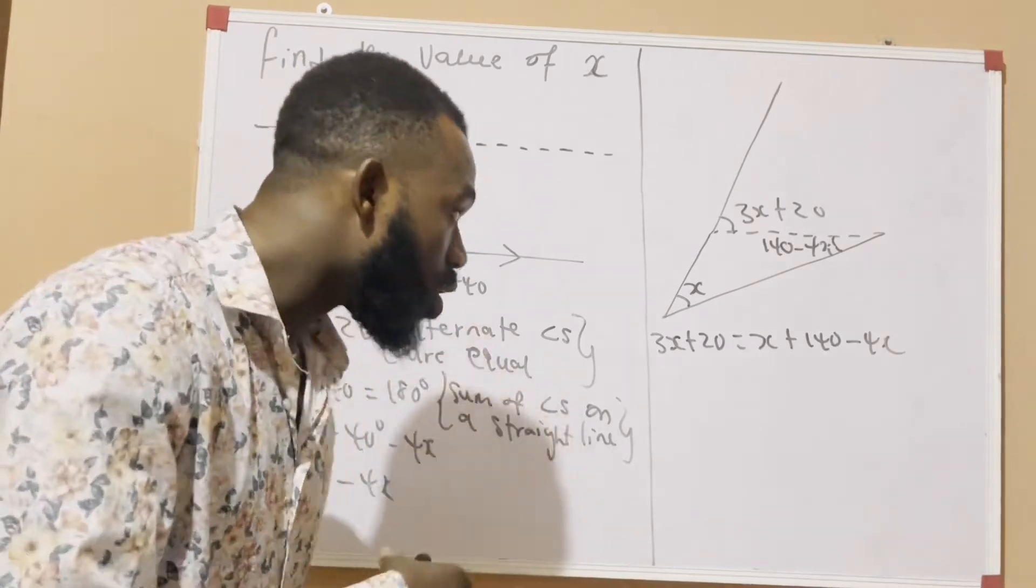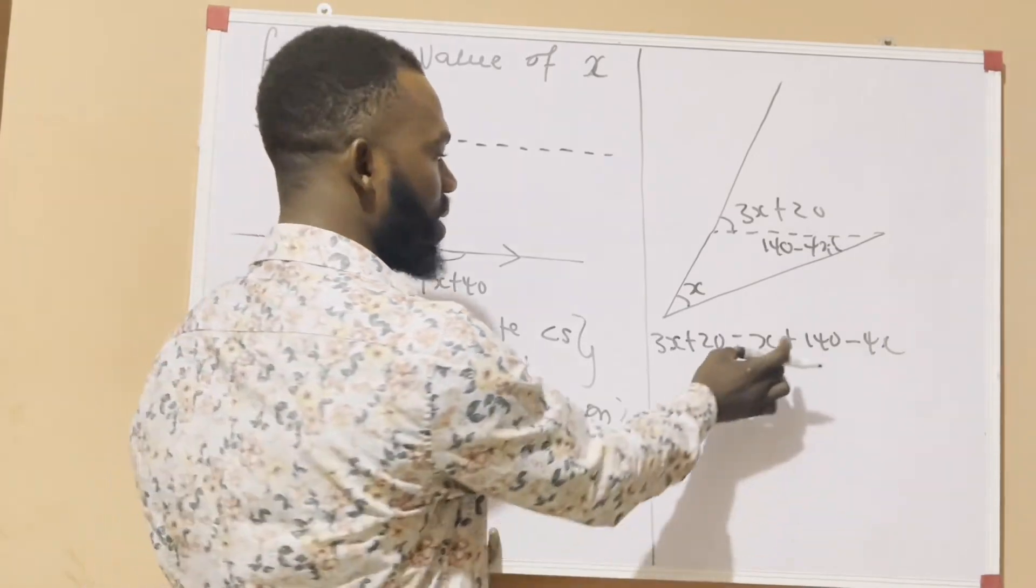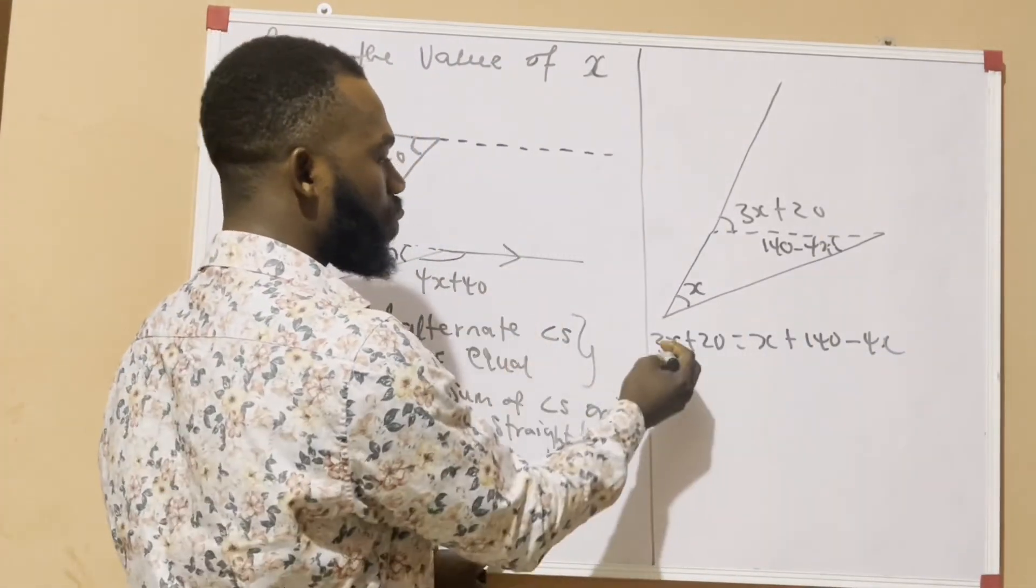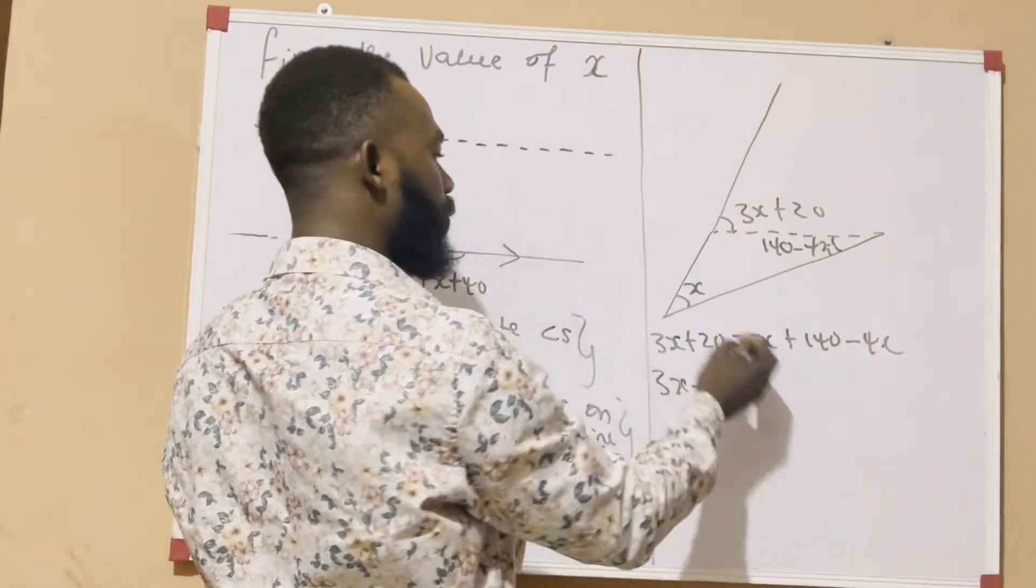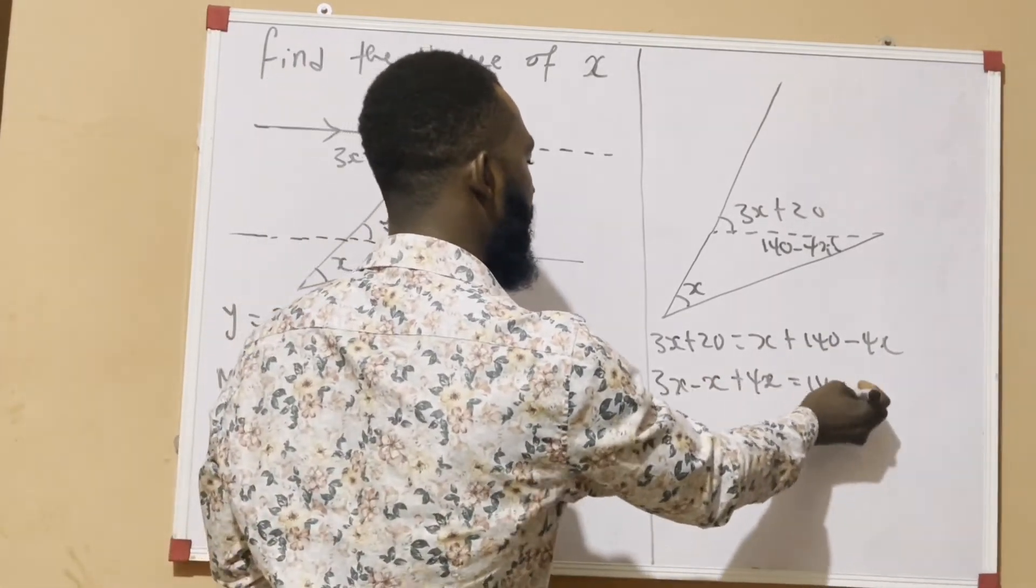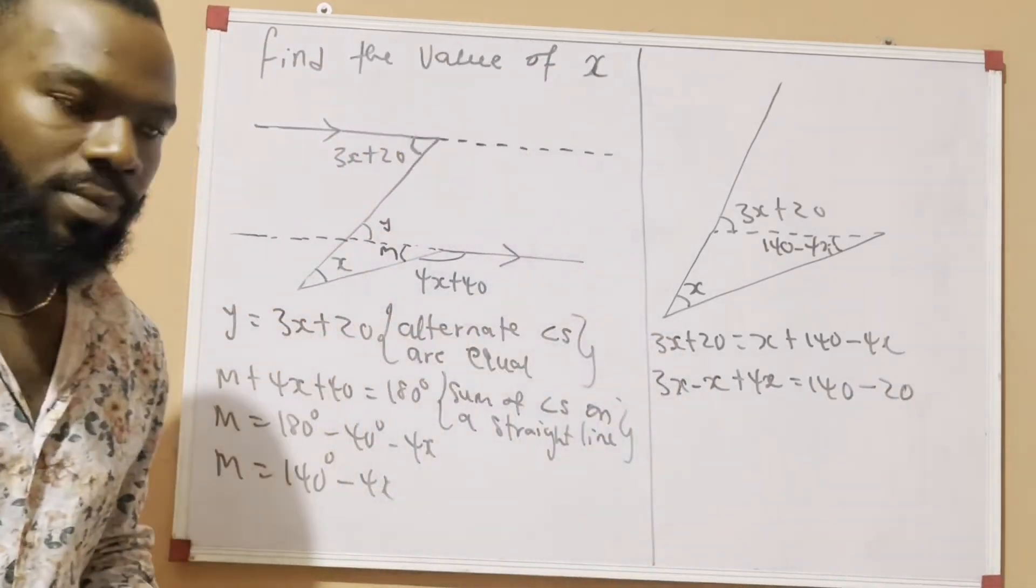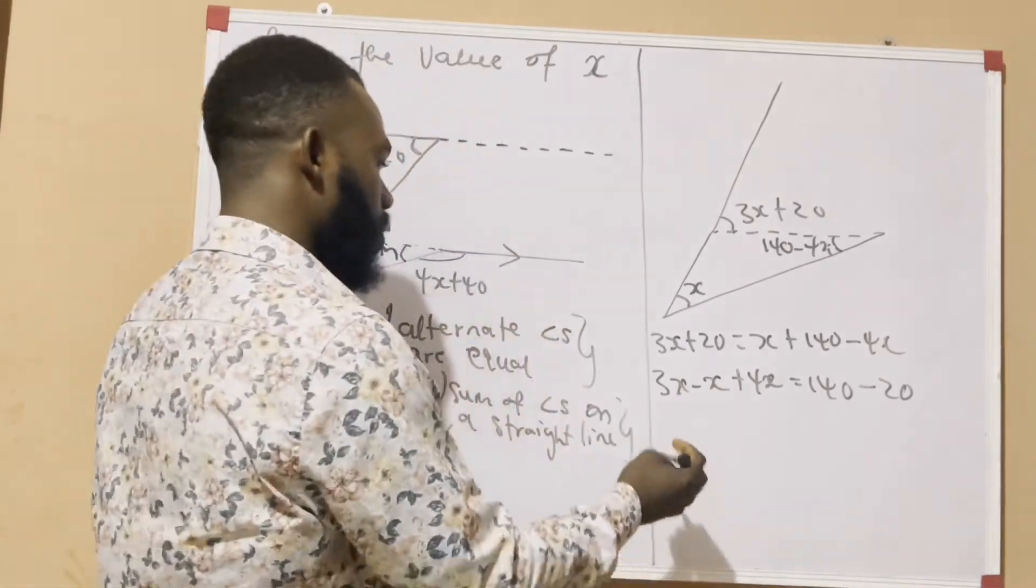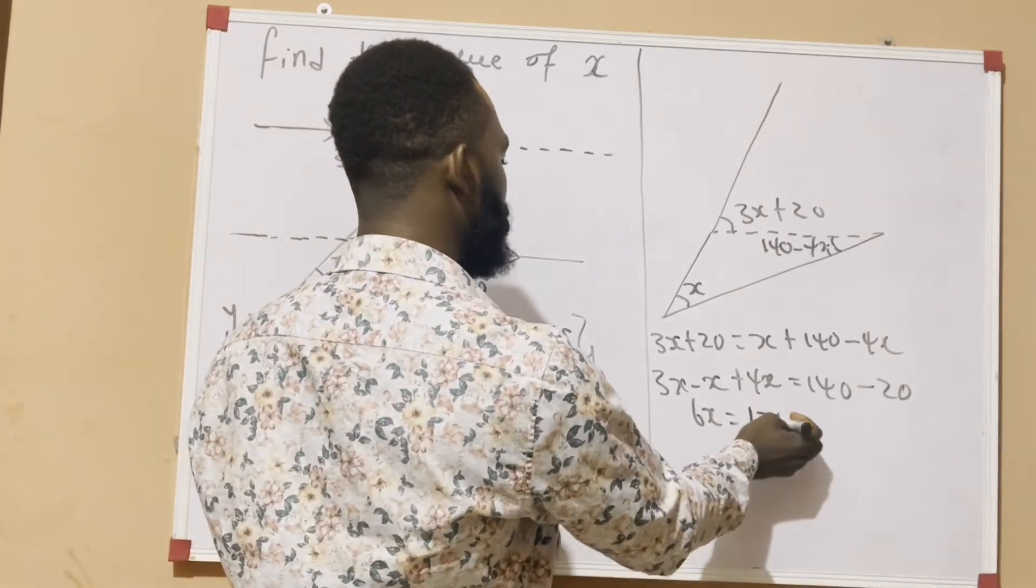Let's take x to one side of the equation and then a constant to the other side of the equation. So, it means x and minus 4x has to come to the left-hand side. So, if we do that, we're going to be having 3x. If x crosses, it becomes minus x. If minus 4x crosses, it becomes plus 4x equals 140. If plus 20 crosses, it becomes minus 20. Of course, we all know, 3x minus x gives us 2x and 2x plus 4x gives us 6x. Again, 140 minus 20 gives us 120.